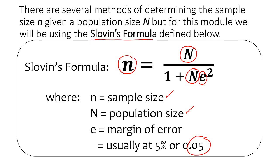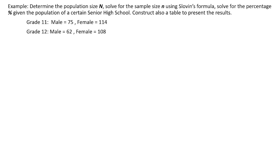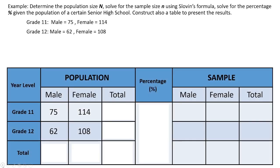Take note of the formula. We will be using PEMDAS: start with the exponent, then multiply it to N, then add it to 1, then divide 1 by the result of the denominator. Now let's apply this to our example. Determine the population size N, solve the sample size n using Sloven's formula, solve for the percentage given the population of a certain senior high school, and construct a table to present the results.